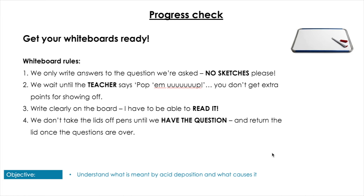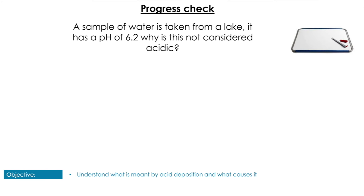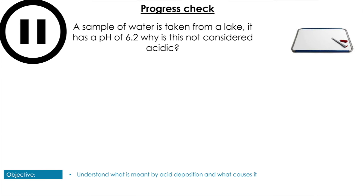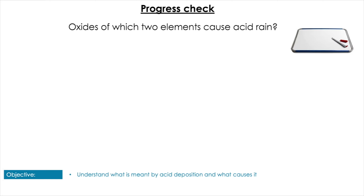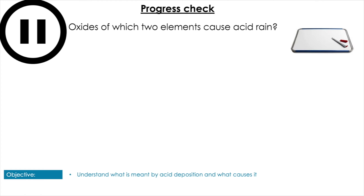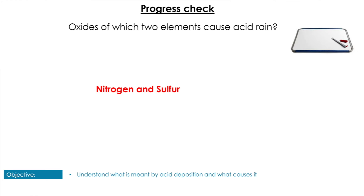Question time. First question: a sample of water is taken from a lake. Explain why a pH of 6.2 is not considered acidic rain. Pause the video to give yourself some time. CO2 accounts for all pH between 5.6 and 7 — so that's correct. Next: oxides of which two elements cause acid rain? The answer is, of course, nitrogen and sulfur.